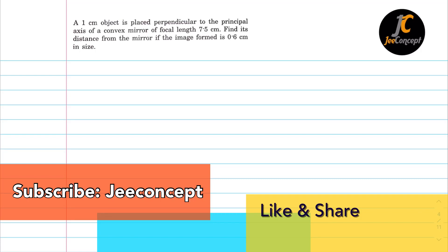Hello everyone, in this problem a one centimeter object is placed perpendicular to the principal axis of a convex mirror of focal length 7.5 centimeter. Find its distance from the mirror if the image formed is 0.6 centimeter in size.